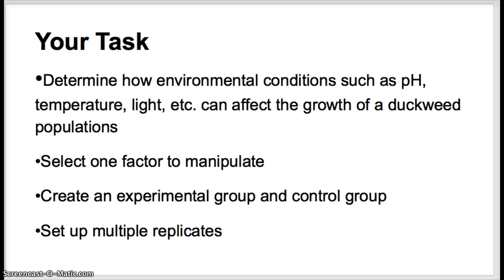Your task is to pick one environmental condition — this could be pH, temperature, duration of light, or intensity of light — and measure how that affects the growth of a duckweed population. Limit yourself to manipulating one factor and create an experimental group and a control group. Make sure to set up multiple replicates so calculations can be done. You can even partner with other teams so that you have more replicates than one group could accomplish in class.